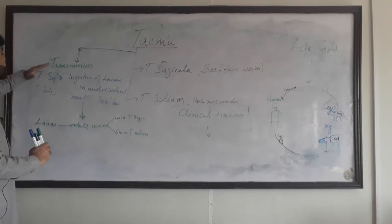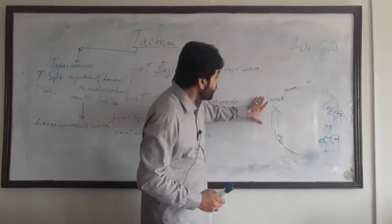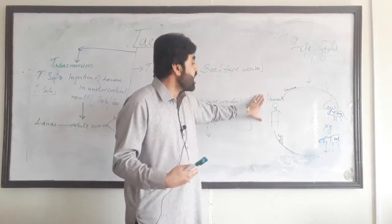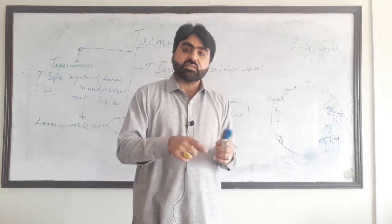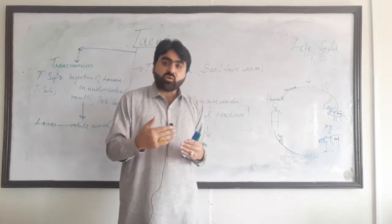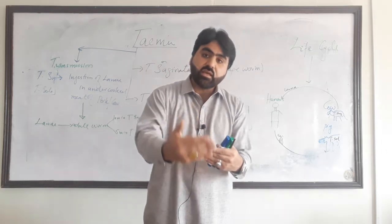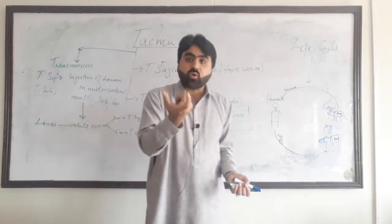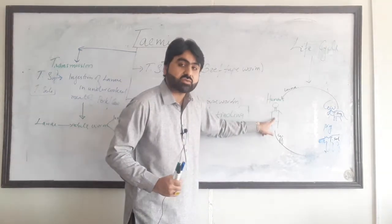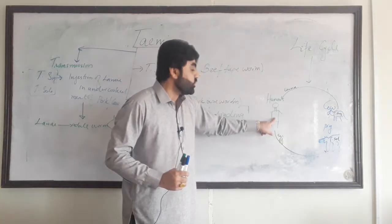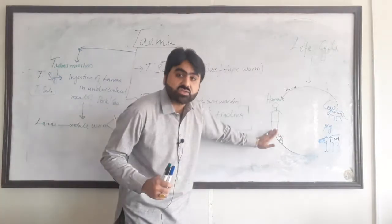After transmission, the life cycle of these parasites is important to discuss. When a human being is infected with Taenia saginata or Taenia solium, the adult tapeworm will be present in the intestine of the human being. The adult tapeworm continuously sheds the distal proglottids, which are gravid and contain eggs. These gravid proglottids are excreted in the feces of the human being.